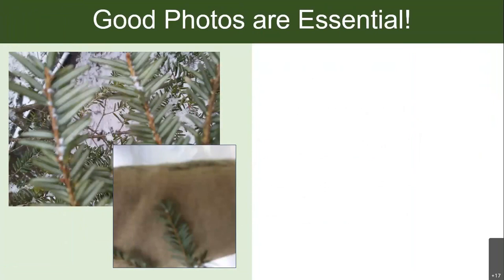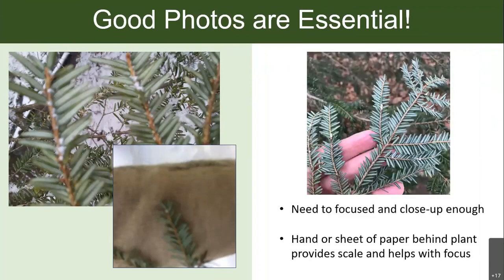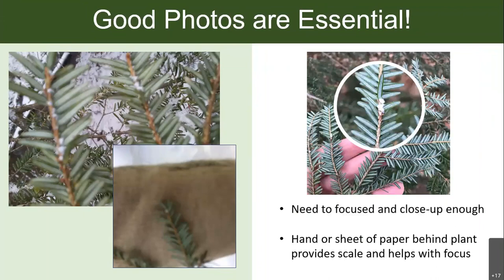Pictures are really important when making real species records. On the left I have blurry pictures of hemlock woolly adelgid — it's hard to tell whether there's just snow on the branches or actual woolly masses at the bases of the needles. On the right is an in-focus example where you can zoom in and clearly see the white woolly masses. Tips for taking good photos: use your hand behind the branch so the camera focuses on it, or use a sheet of paper — this helps your camera focus and provides scale.